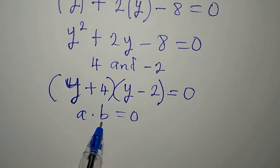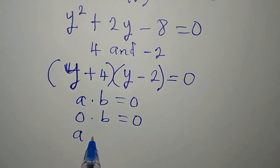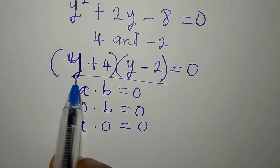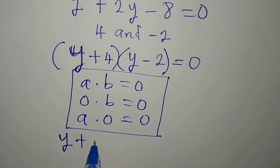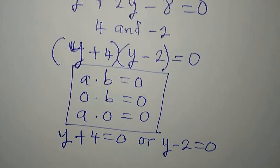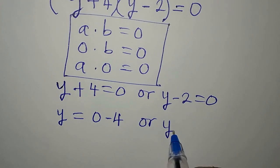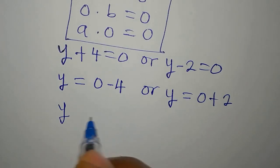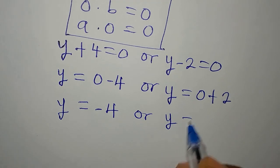When two terms multiply to give 0, either the first term or the second term must equal 0 — since 0 times anything is 0. So we set y + 4 = 0 or y - 2 = 0, giving y = -4 or y = 2.